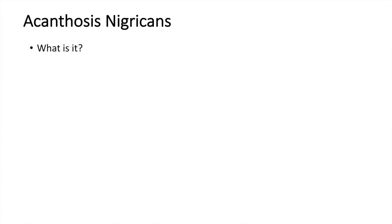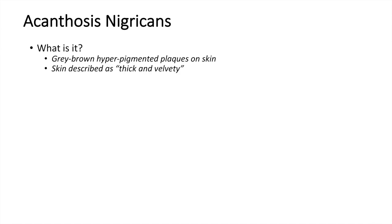So to begin, what is acanthosis nigricans? Well, acanthosis nigricans is a relatively common condition involving formation of grayish-brown hyperpigmented plaques on the skin. The skin is often described as very thick and velvety. The most common sites of formation of these plaques include the back of the neck, the sides of the neck, and the axillae or the armpits.